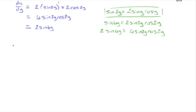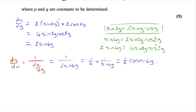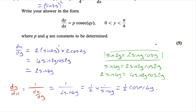Using another form of the chain rule, we know that dy dx equals 1 over dx dy, so our dy dx is going to be equal to 1 over 2 sin 4y. We can separate this to get half times 1 over sin 4y, which is equal to half cosec 4y. Comparing our results, we can see p equals a half, q equals 4.